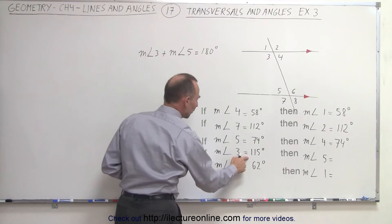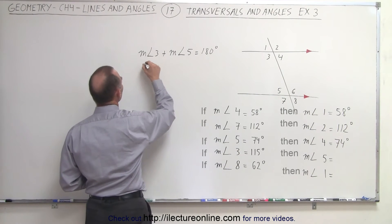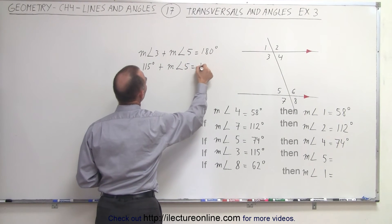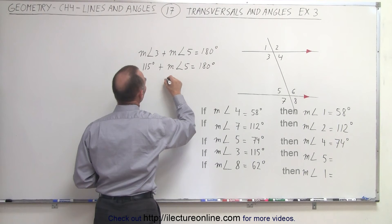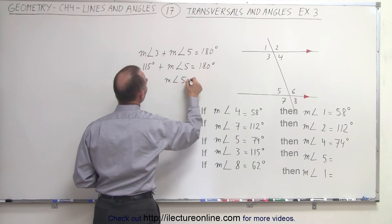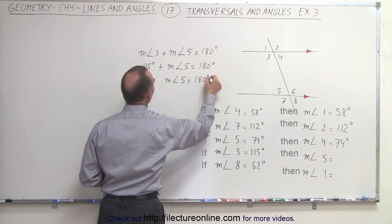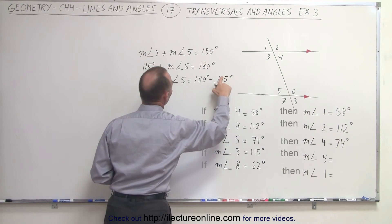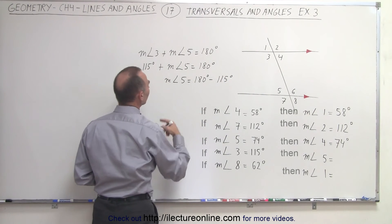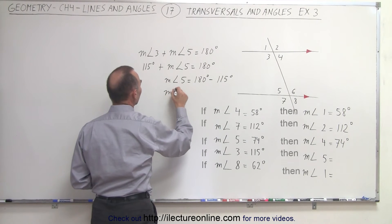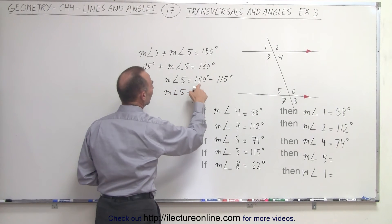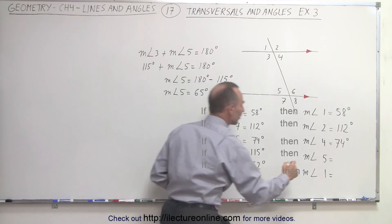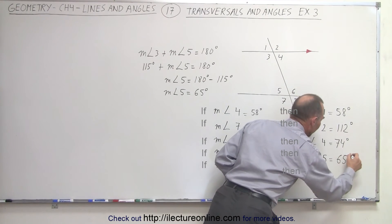We're told that the measure of angle three is 115 degrees. So 115 degrees plus the measure of angle five equals 180 degrees, or the measure of angle five is equal to 180 degrees minus 115 degrees. Subtracting that, we therefore have the measure of angle five equal to 65 degrees. And that's how we find out what the measure of angle five is.